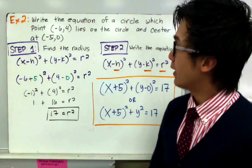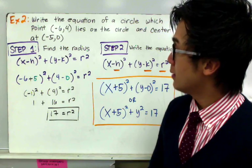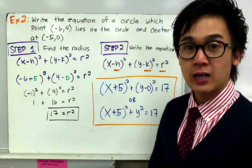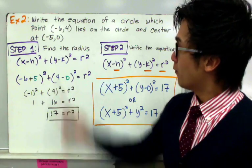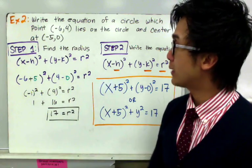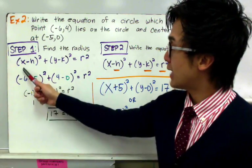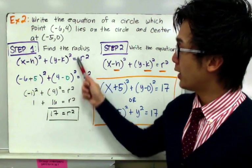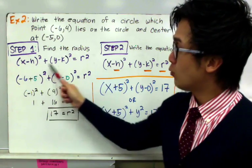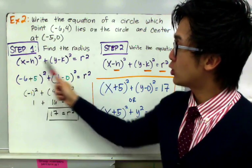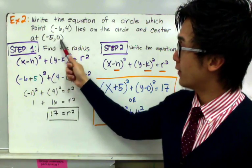For example number 2, we write the equation of the circle given its parts: a point (−6, 4) that lies on the circle and its center at (−5, 0). The first step is to find the radius. Using the standard equation (x − h)² + (y − k)² = r², substitute x = −6, y = 4, h = −5, and k = 0.